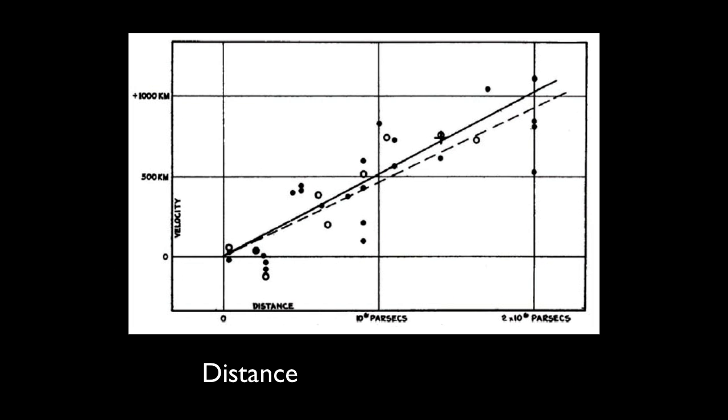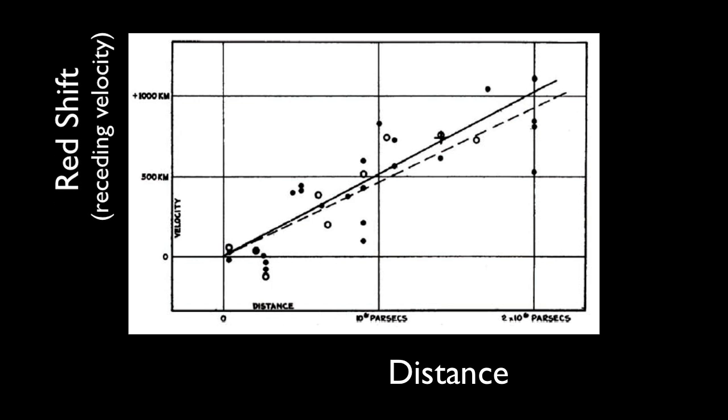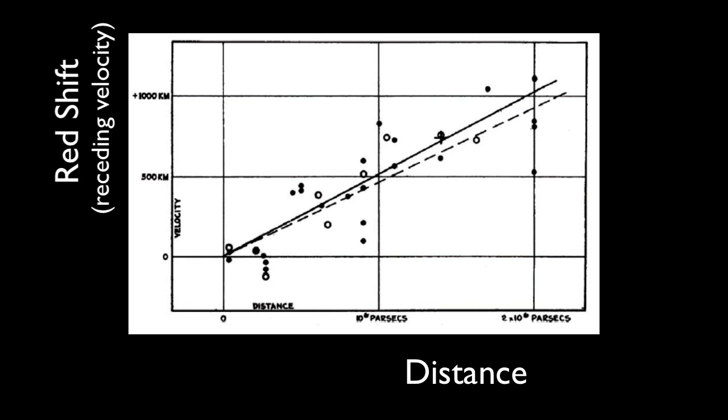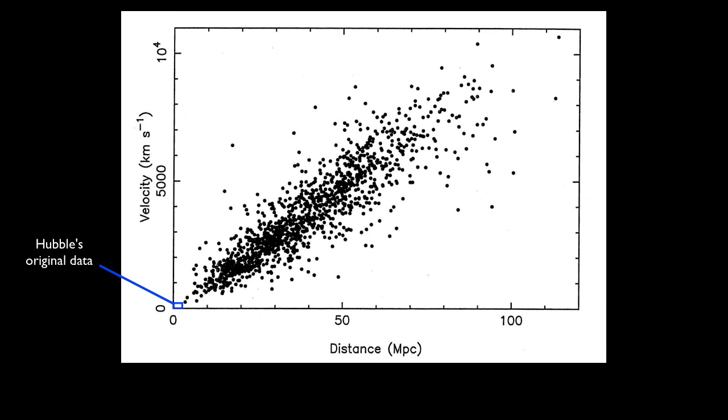Hubble found a direct relationship between a galaxy's distance and its red shift. Here's one of his original graphs. Note, the greater the distance, the greater the red shift. With modern space telescopes, we've been able to extend this graph much farther, and we find this direct relationship holds true.